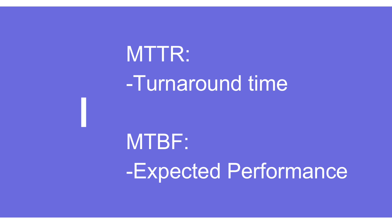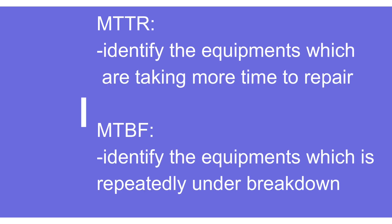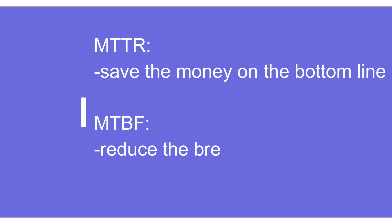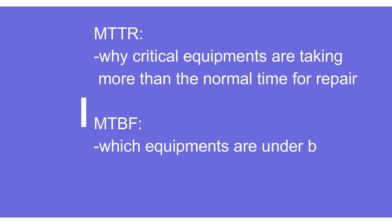With MTTR, we identify which equipment is taking more time to repair and take corrective actions. With MTBF, we identify equipment that is failing regularly and decide what action needs to be taken. The overall objective of monitoring MTTR is to save money and improve the bottom-line profitability of the organization. The objective of MTBF is to reduce the number of breakdowns as much as possible. MTTR helps identify critical equipment taking much longer to repair than usual, while MTBF highlights equipment that is regularly breaking down.